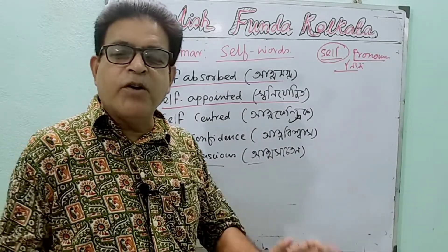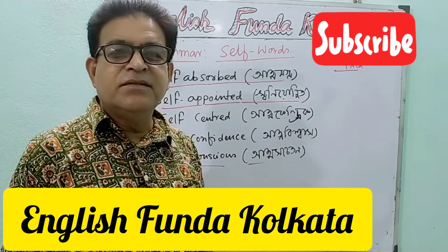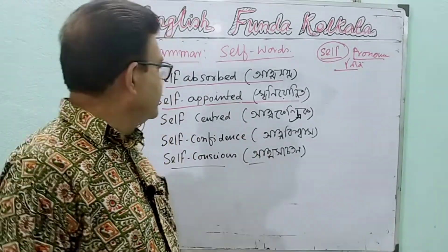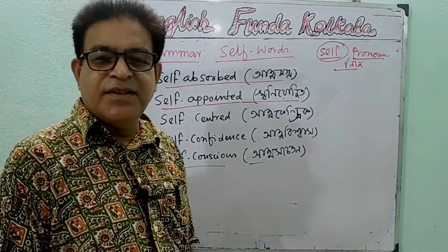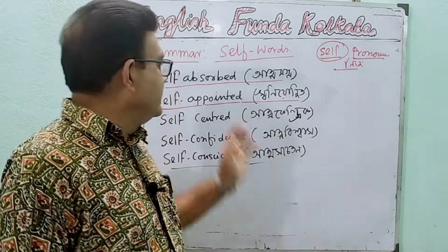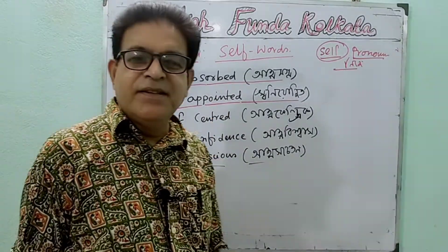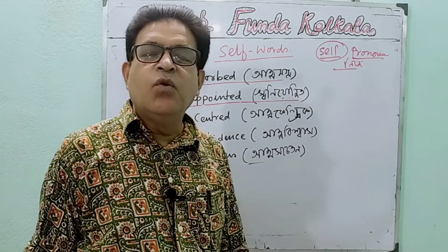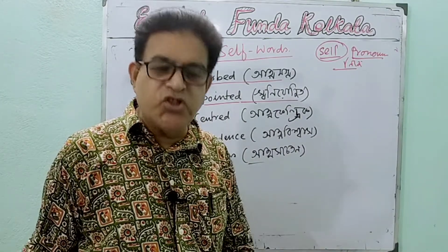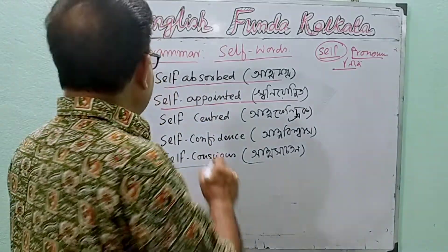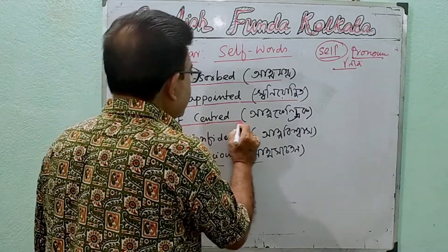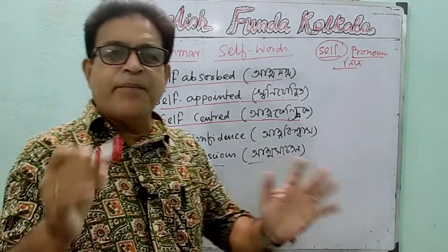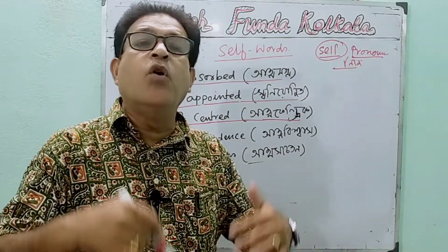Nobody in the class obeys him as monitor because he is self-acquainted. Self-acquainted is a type of person who only thinks of his own benefit.